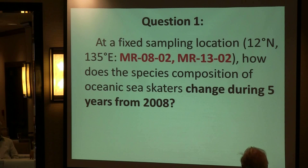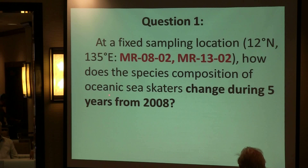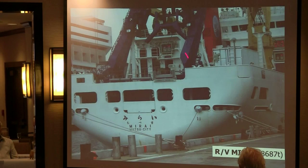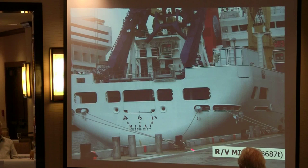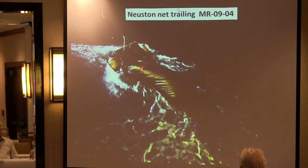Question one is: at one fixed location, how does the species composition of sea skaters change during five years? We used a research vessel, the Mirai, and a net to collect sea skaters.